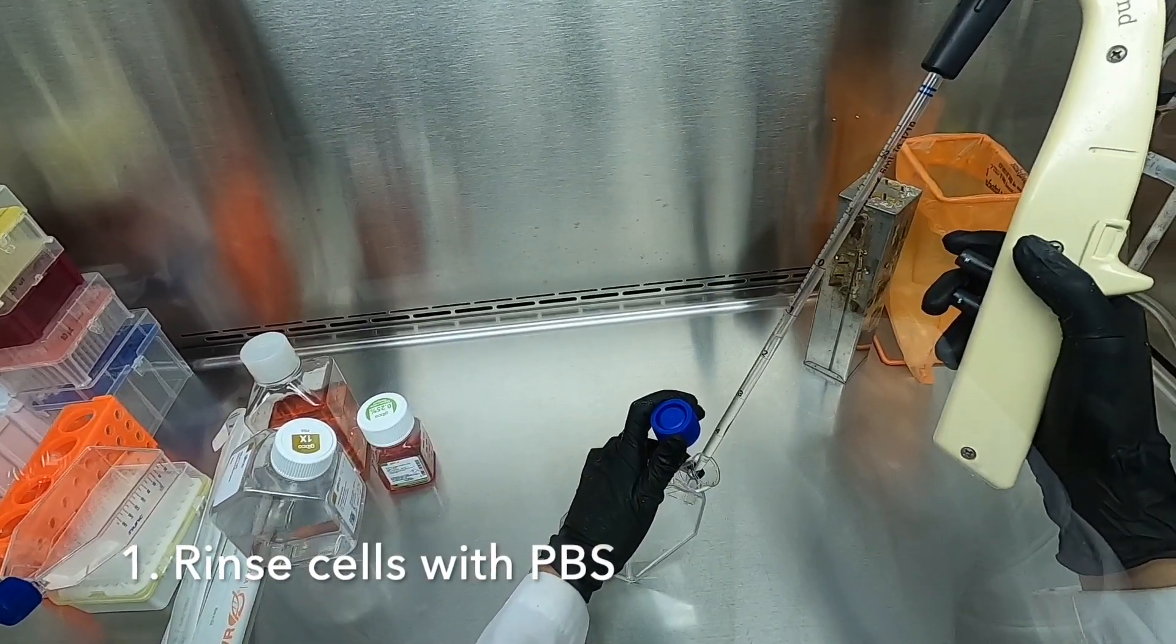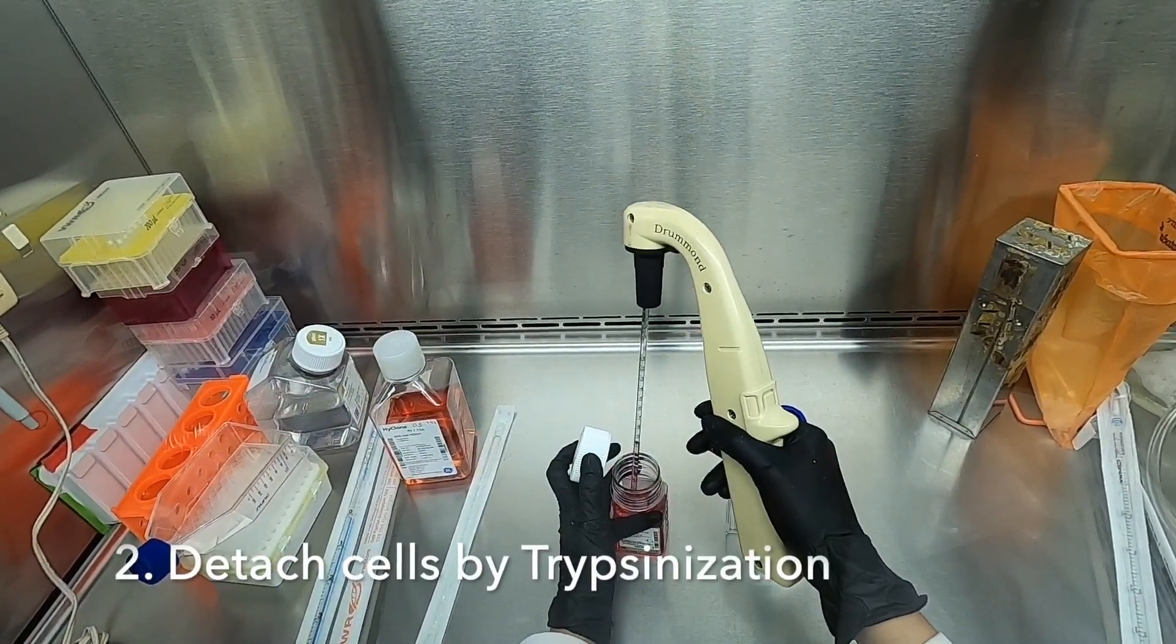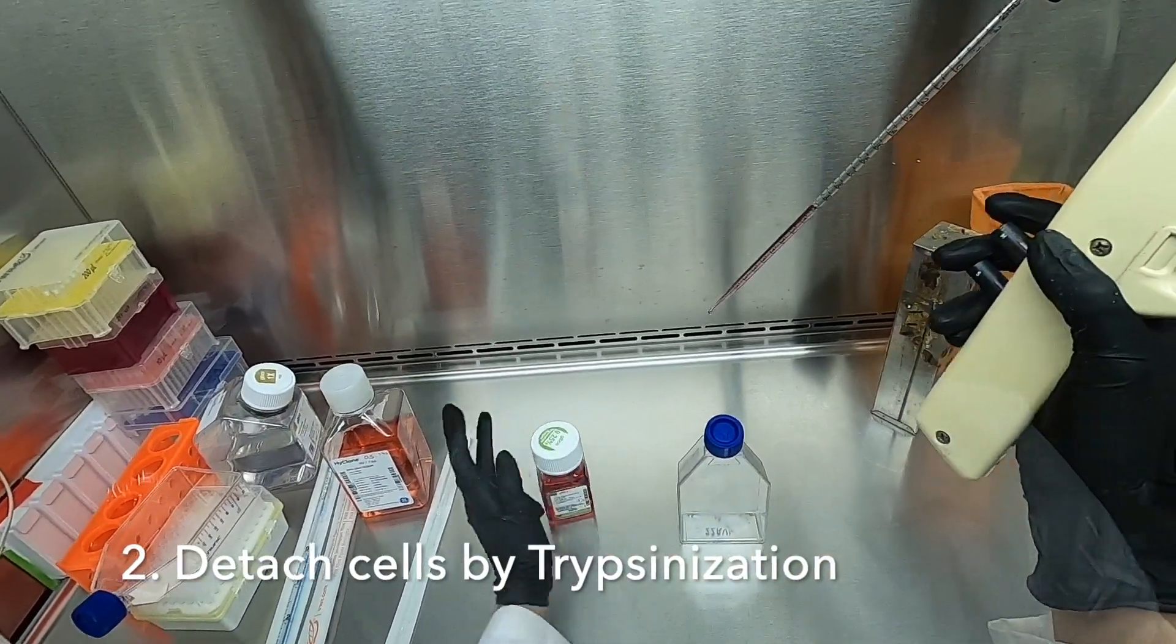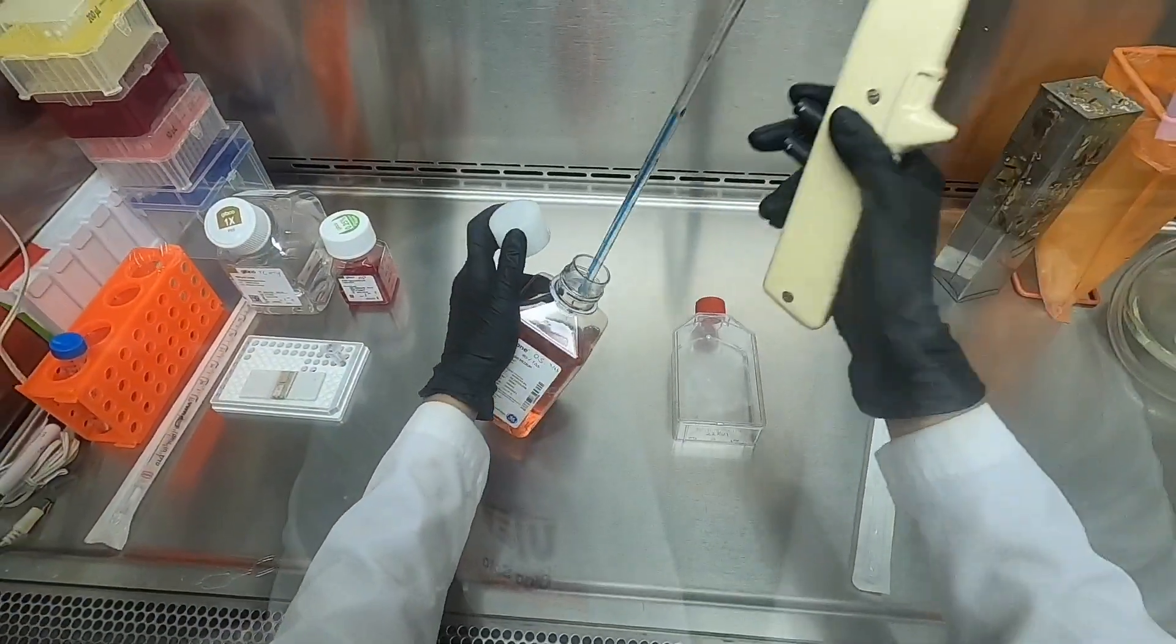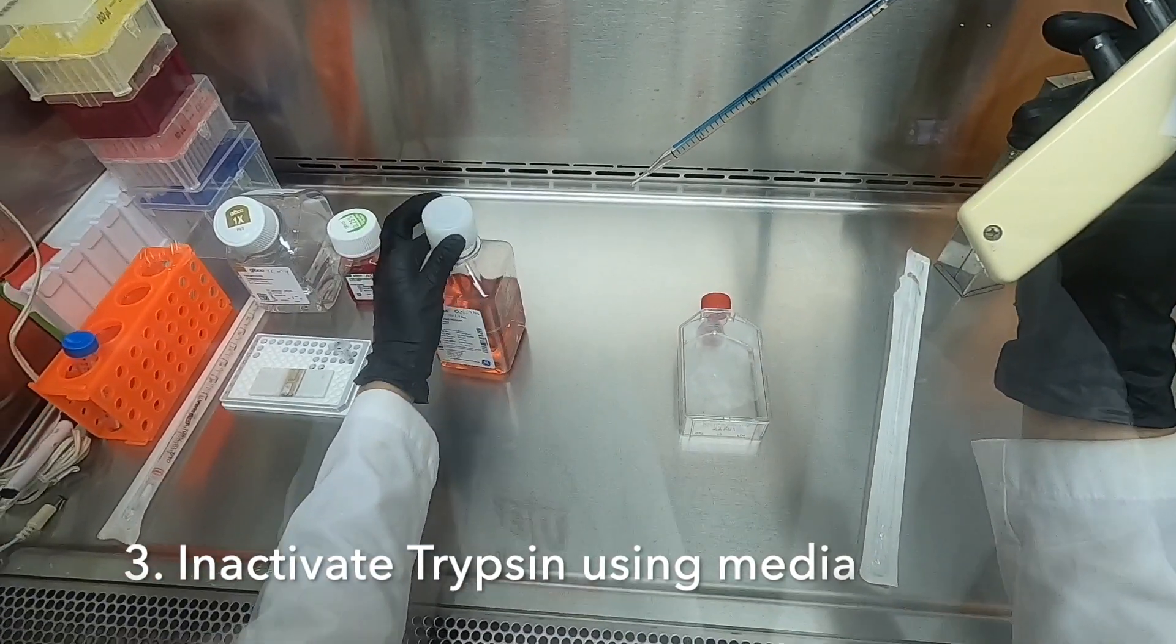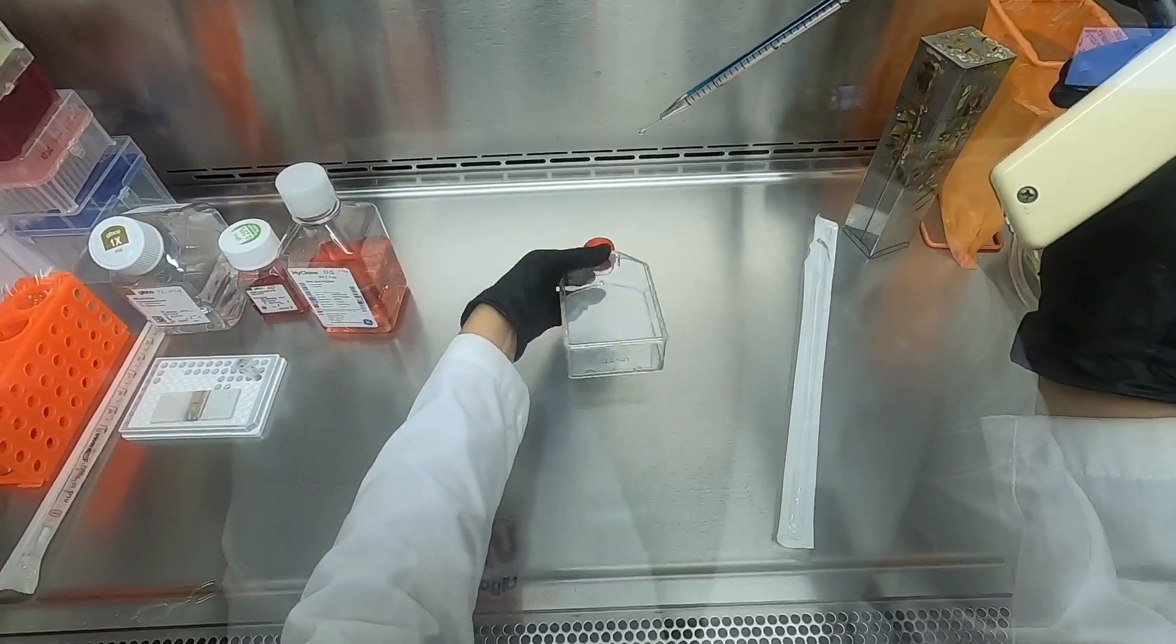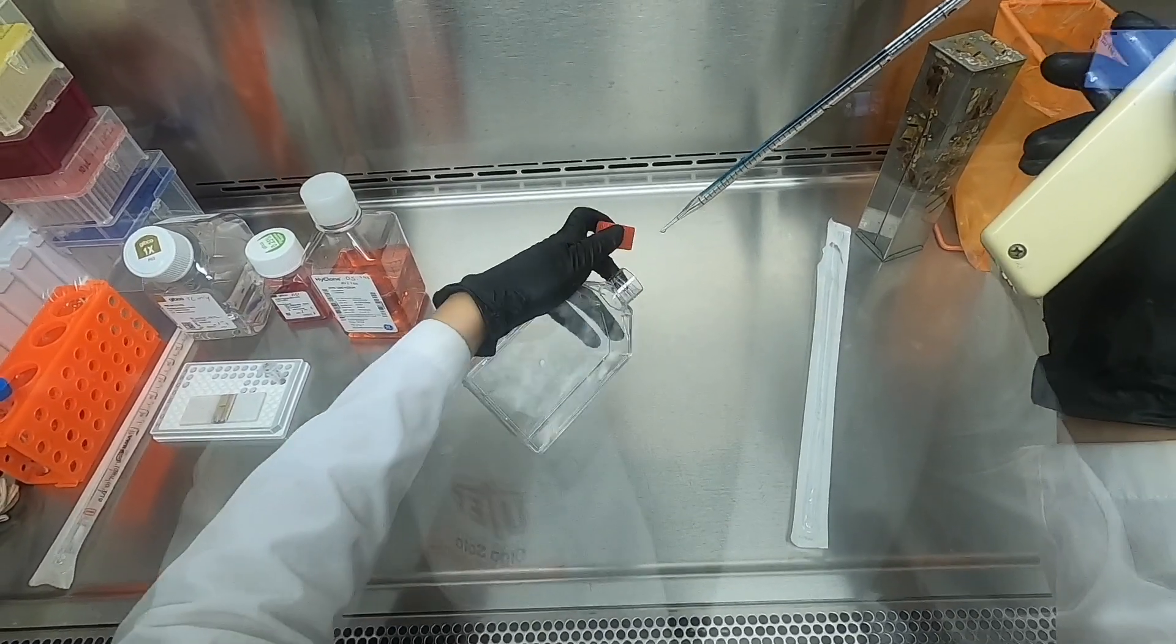Briefly, we first rinse the excess FBS and media from our flasks. We then proceed to trypsinize our cells in order to detach from our flasks. Then we inactivate the trypsin using complete media containing FBS, making sure that we achieve a single cell suspension.